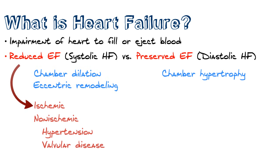Preserved ejection fraction, or diastolic heart failure, is different. Here we have chamber hypertrophy, meaning the wall of the heart is getting thicker. This is due to concentric remodeling, where ventricular muscle cells are laid next to each other, thickening the wall of the heart and creating chamber hypertrophy. As a result, the actual volume of the chamber within the left ventricle decreases because there is increasing muscle mass or thickness of that ventricle wall.